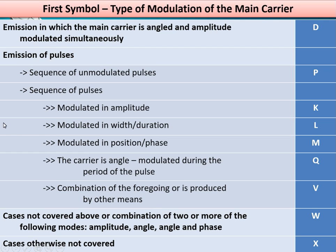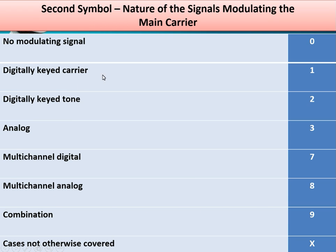For the second symbol, it is either a number or the letter X. The numbers used are 0, 1, 2, 3, 7, 8, and 9. These represent properties such as: no modulating signal, digitally keyed carrier, keyed tone, analog, multi-channel digital, combination, and so on.